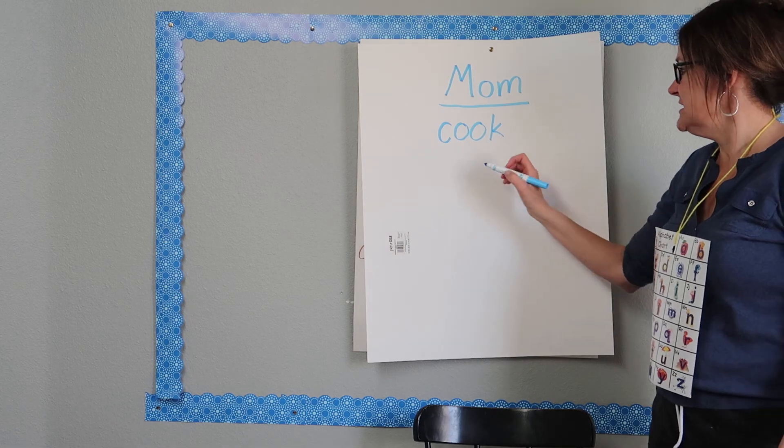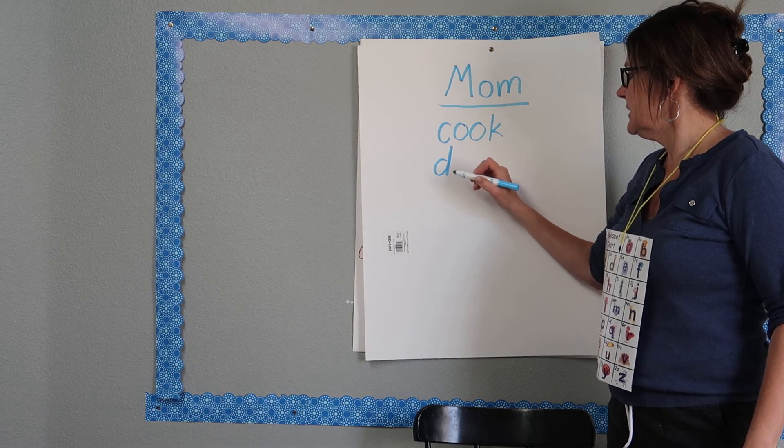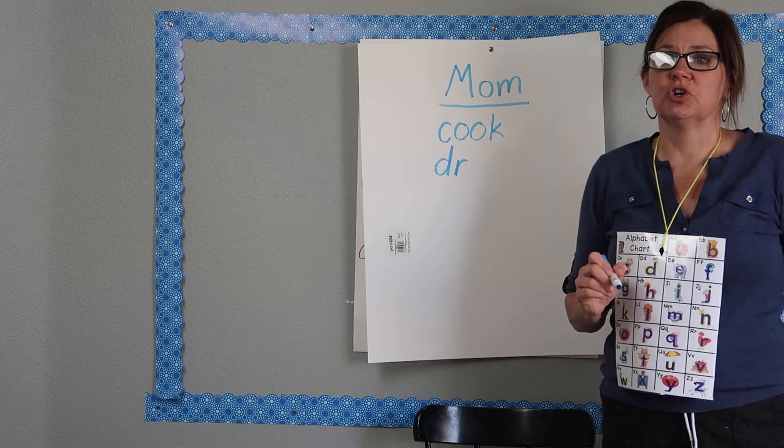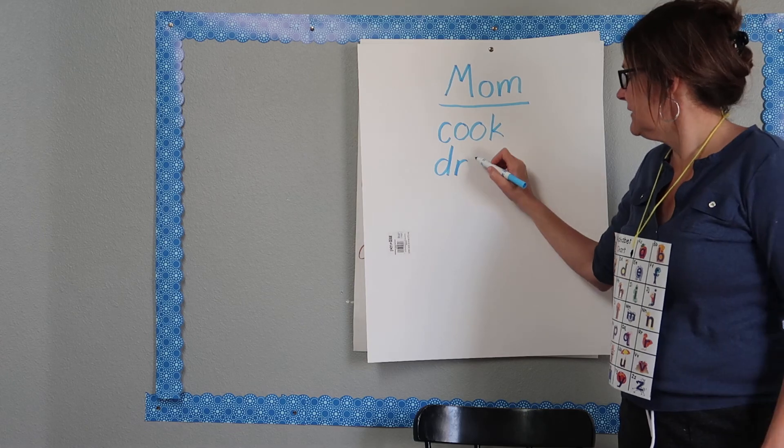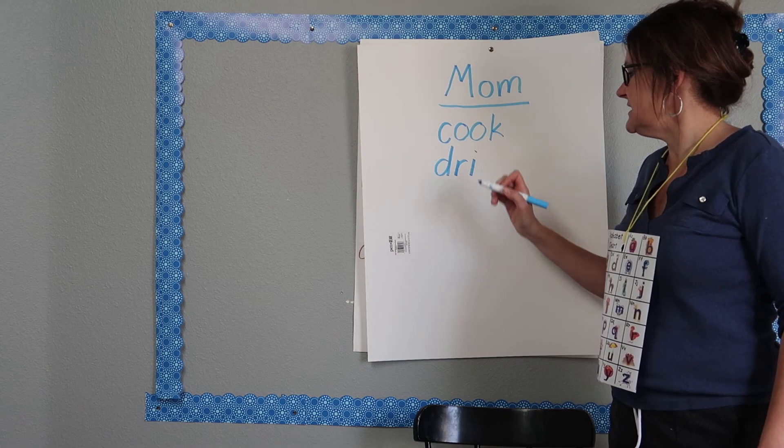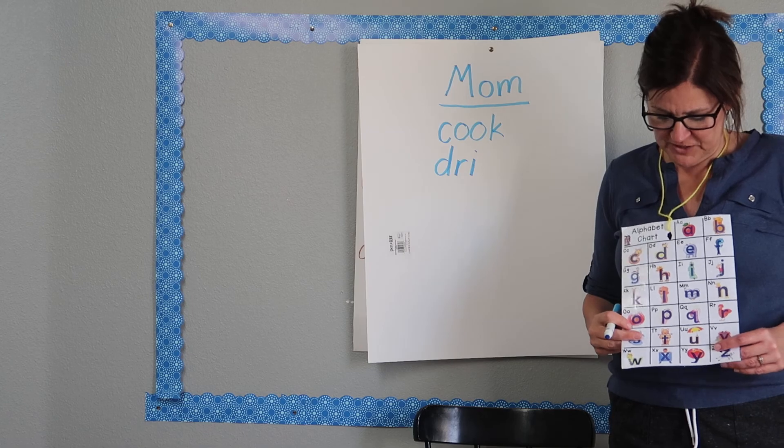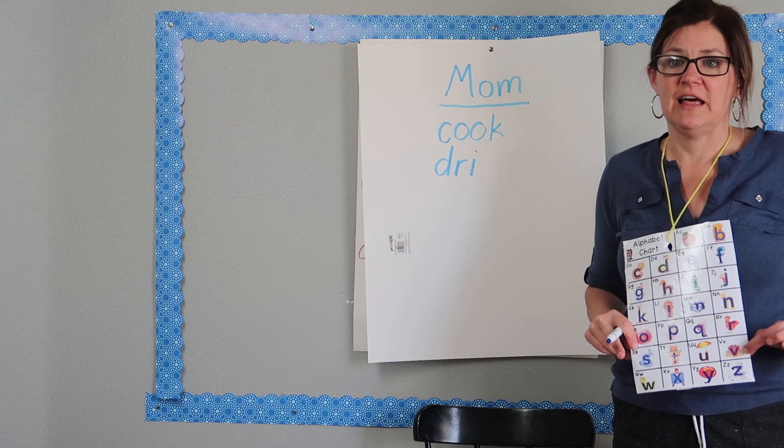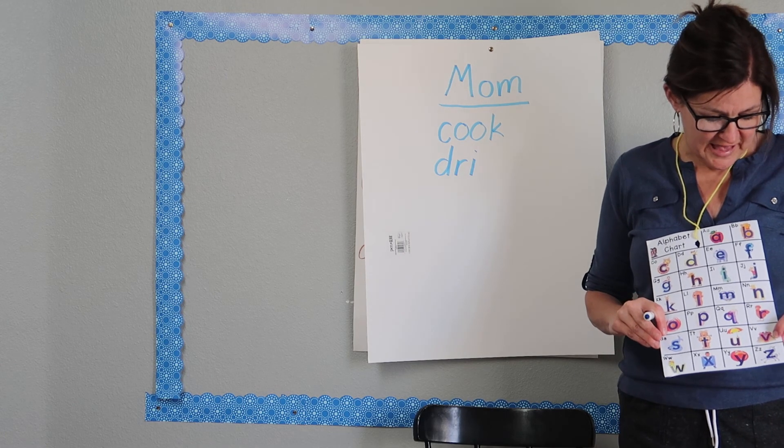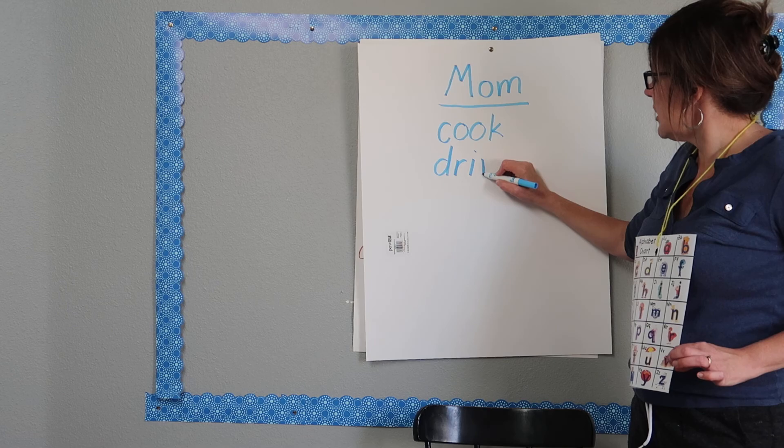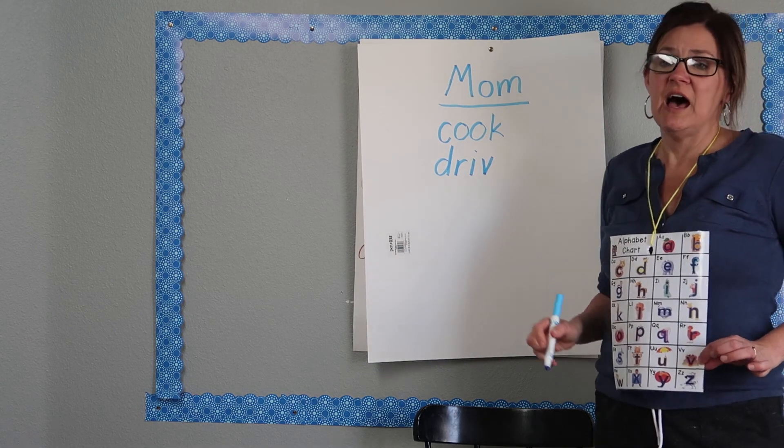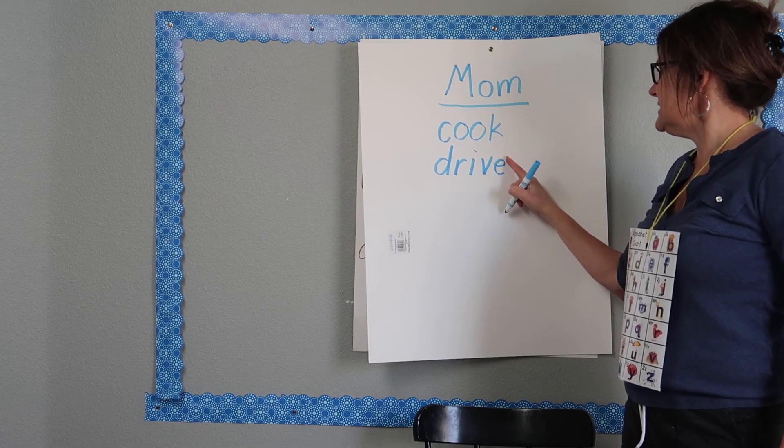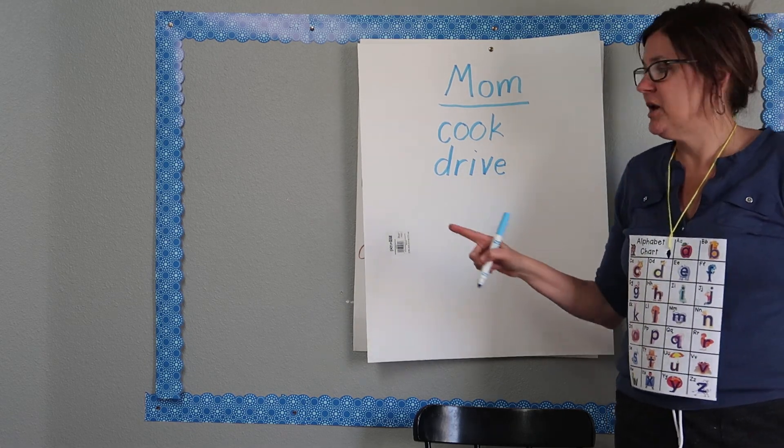D-R-I. I need to look at my letter chart to help me out. There's that V in Vinnie Volcano right there. Drive. And remember that when the other vowel says its name, you put that magic jumping E on the end to make the other vowel say its name. Drive.